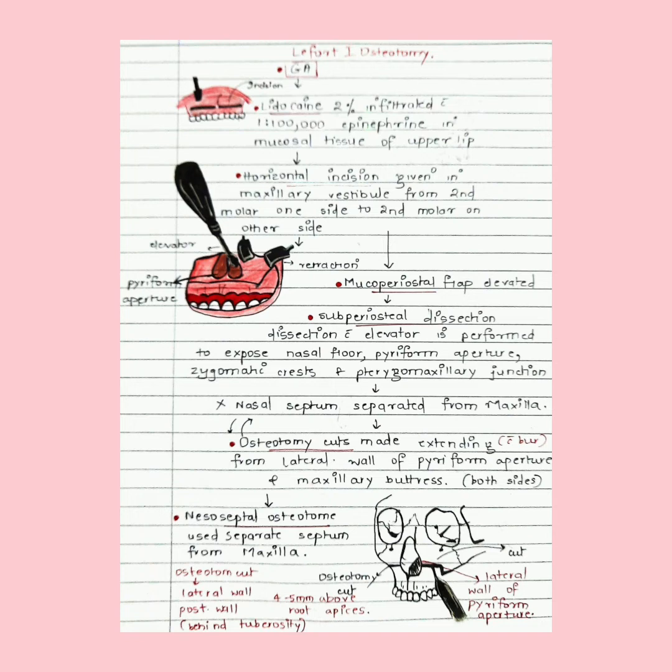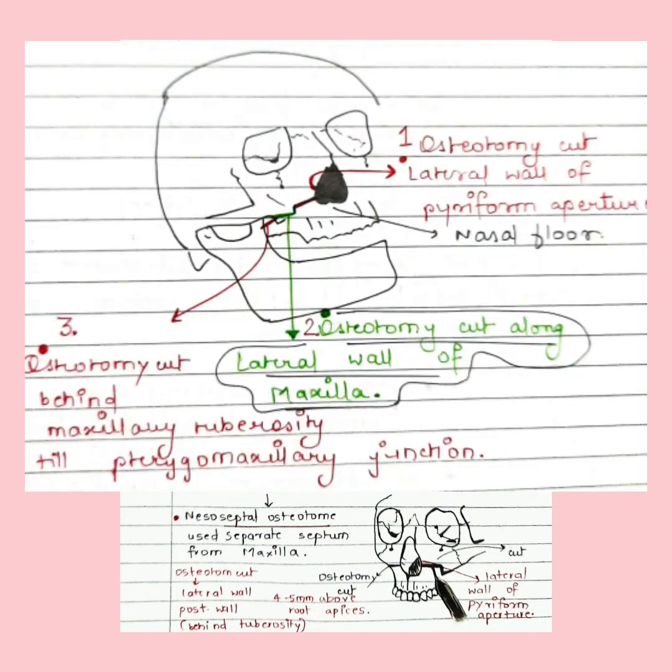Osteotomy cuts are then given extending from the lateral wall of pyriform aperture, continued along the lateral wall of maxilla, and behind the maxillary tuberosity till the pterygomaxillary junction. The cut extends from the lateral wall of pyriform aperture with a vertical step-down along the lateral wall of maxilla, continued behind the tuberosity. Here we remove the whole maxilla, hence we take the cut till the pterygomaxillary junction.